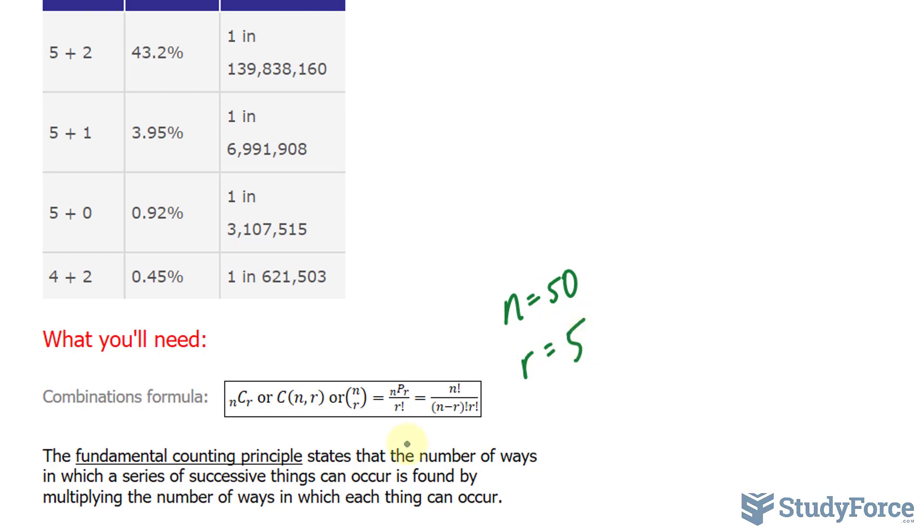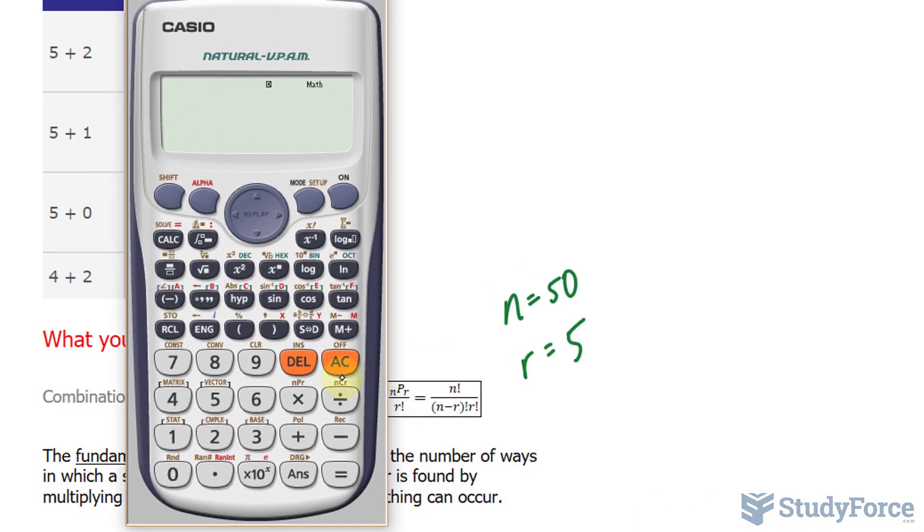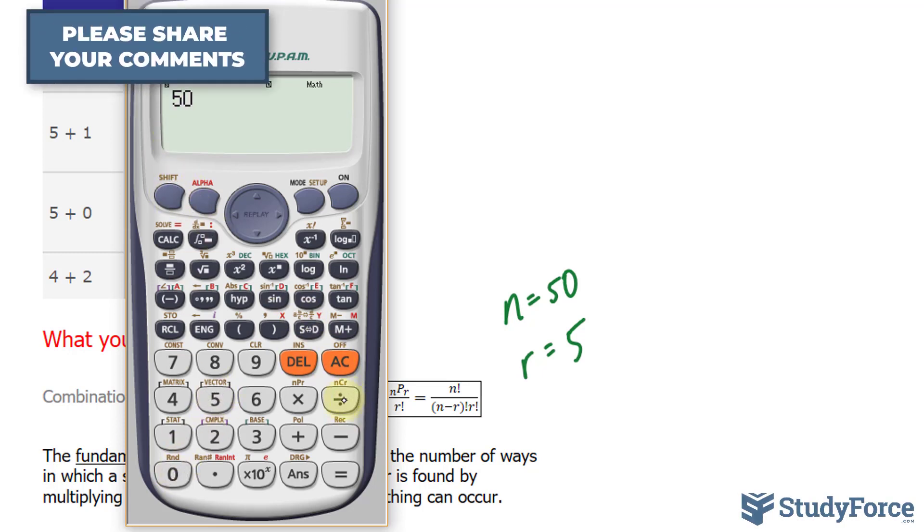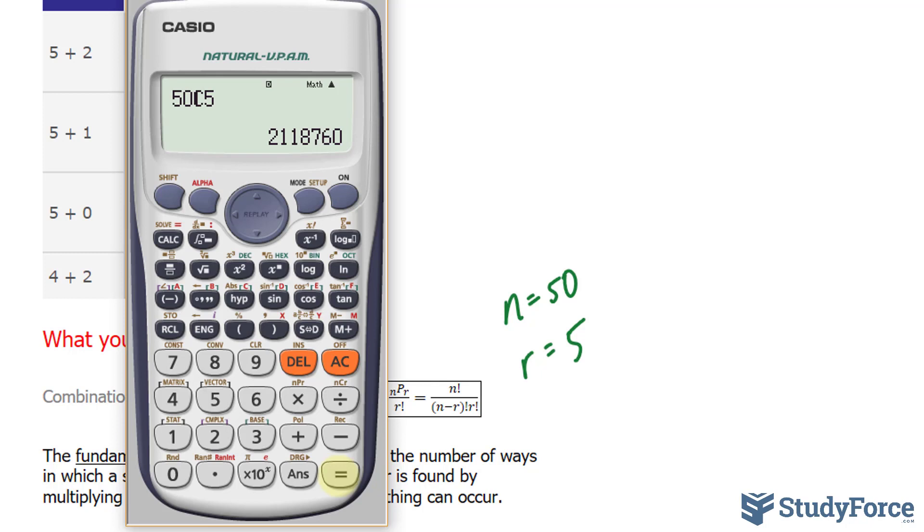Rather than substituting these numbers into the formula, there is a function on your calculator that can quickly do this, found by clicking Shift and this button. So type in 50, Shift, the division button which shows you nCr, 5. We end up with 2,118,760. So the chances of picking 5 correct numbers from a pool of 50 is 1 in this number.